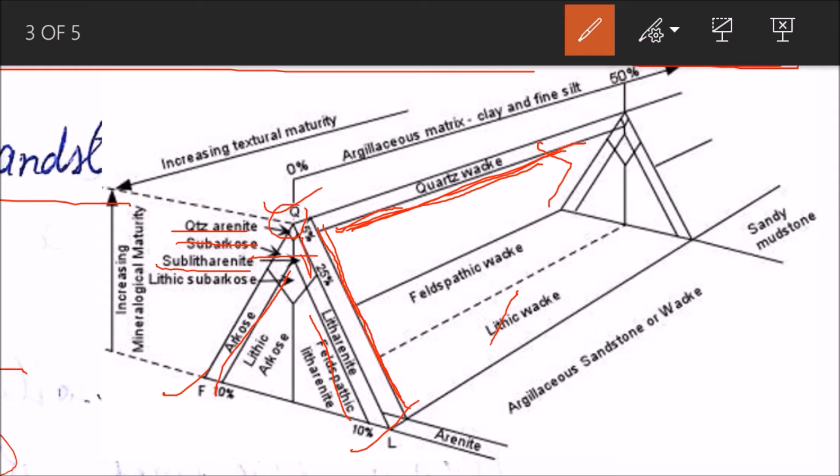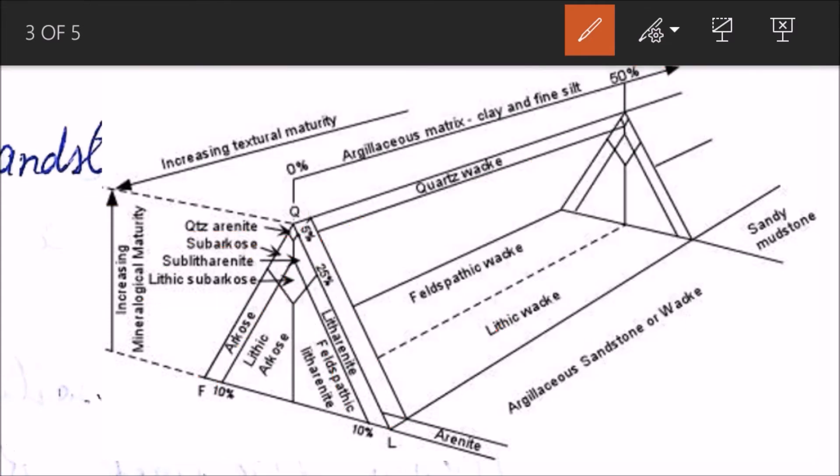This is how sandstone is classified. Mineralogical maturity increases this side - as you have already seen in the last lecture, quartz is more mature than feldspar and rock fragments, of course. And also quartz is more stable. Textural maturity increases this side.